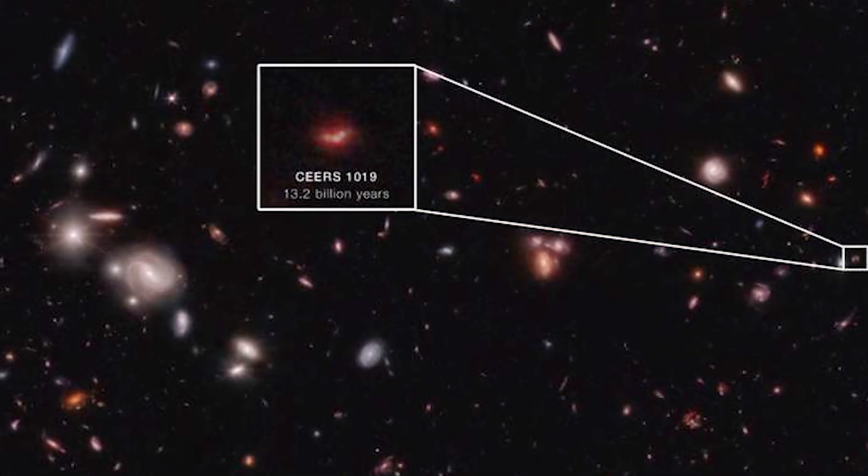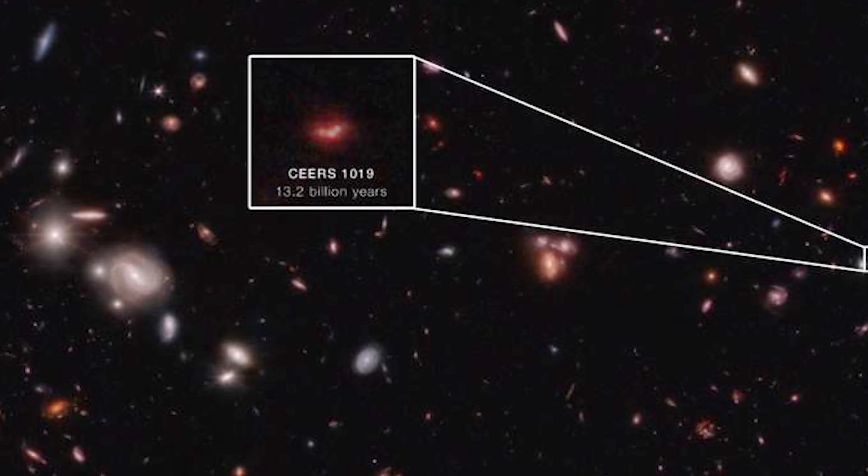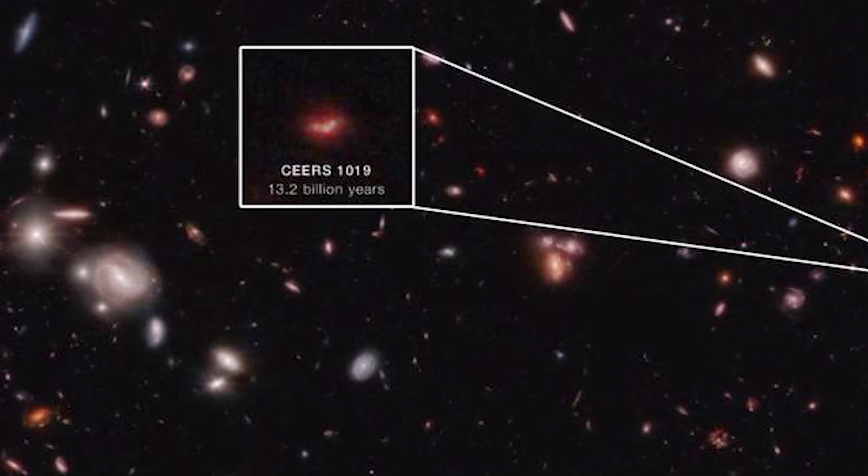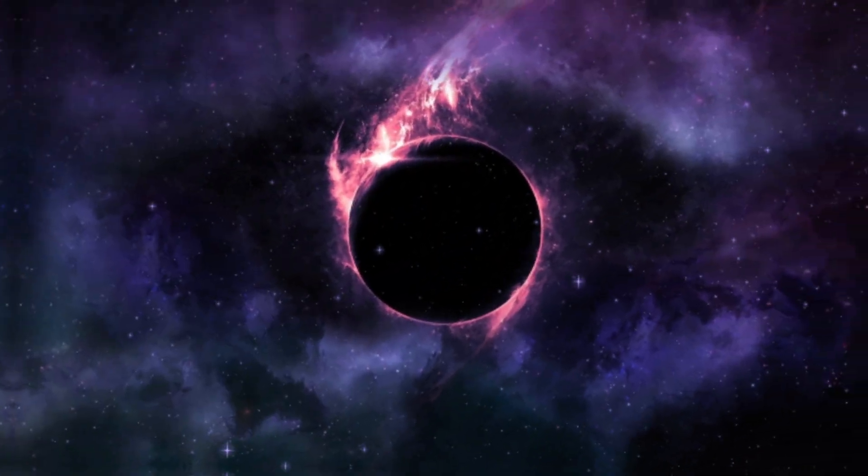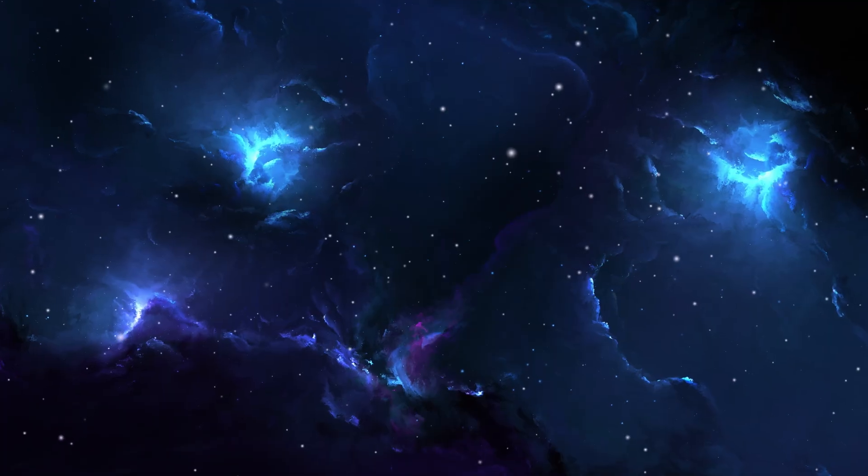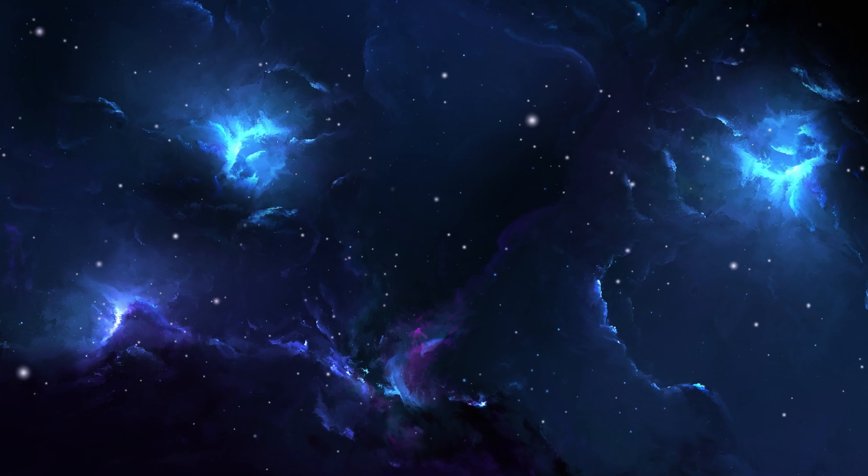The black hole is in galaxy CEERS 1019, which formed about 570 million years after the Big Bang. How this black hole originated shortly after the universe's formation remains a mystery.